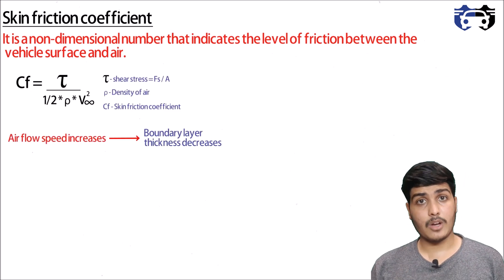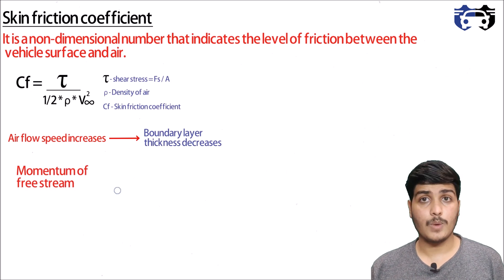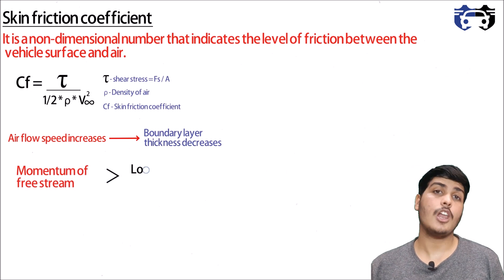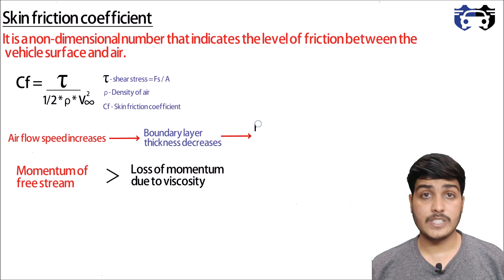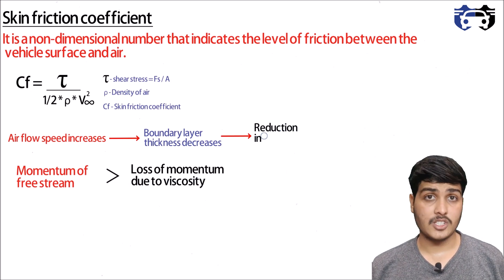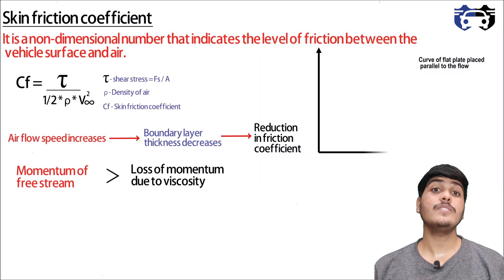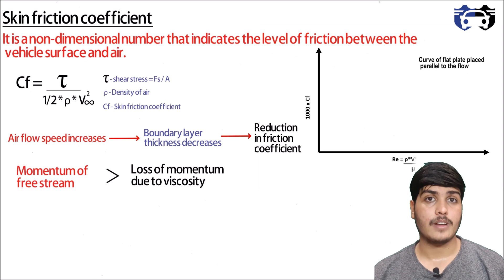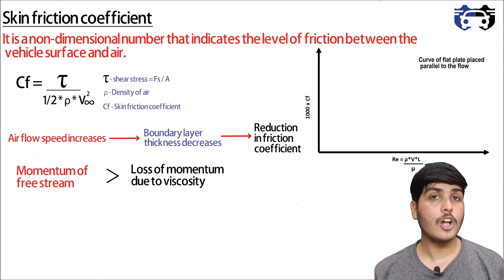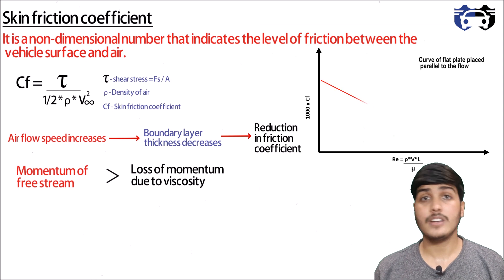As air speed increases, the boundary layer thickness decreases because the momentum of the free stream — mass times velocity — increases compared to momentum loss due to viscosity. Therefore, the friction coefficient also reduces with increasing airflow speed. This trend is visible in the curve of friction coefficient versus Reynolds number: as velocity and Reynolds number increase, the friction coefficient decreases.